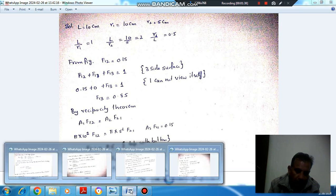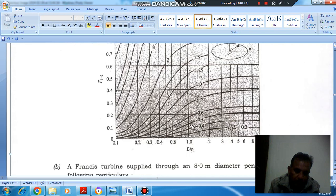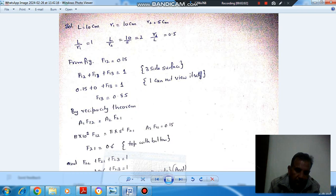So R2 by L is 0.5 and L by R1 is 1. So corresponding to this, we get F12. Corresponding to this, we get F12 is 0.15. So F12 comes out as 0.15.